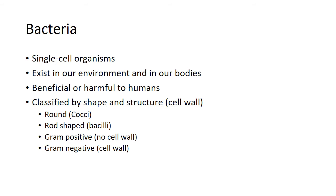Bacteria are classified by their shape and cell wall structure. They can be round, called cocci, or rod-shaped, called bacilli. They're also classified using a gram staining process: gram positive bacteria do not have an outer cell wall, while gram negative bacteria do have one. Each type exhibits different characteristics when stained and viewed under a microscope.